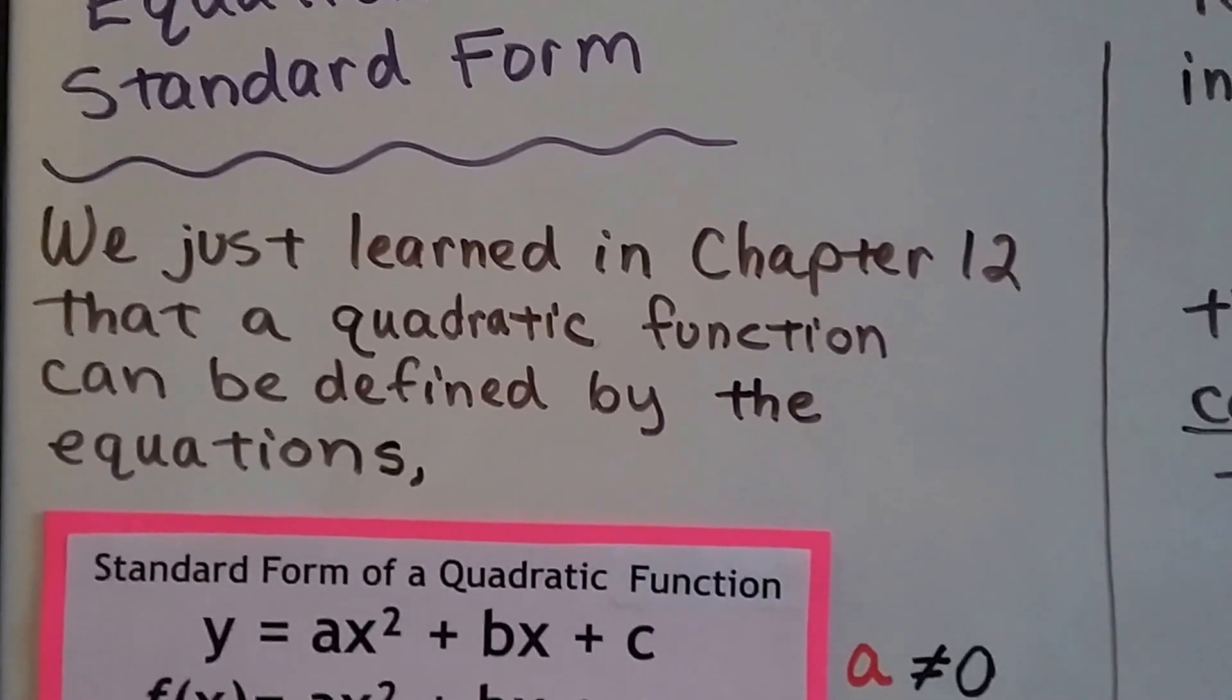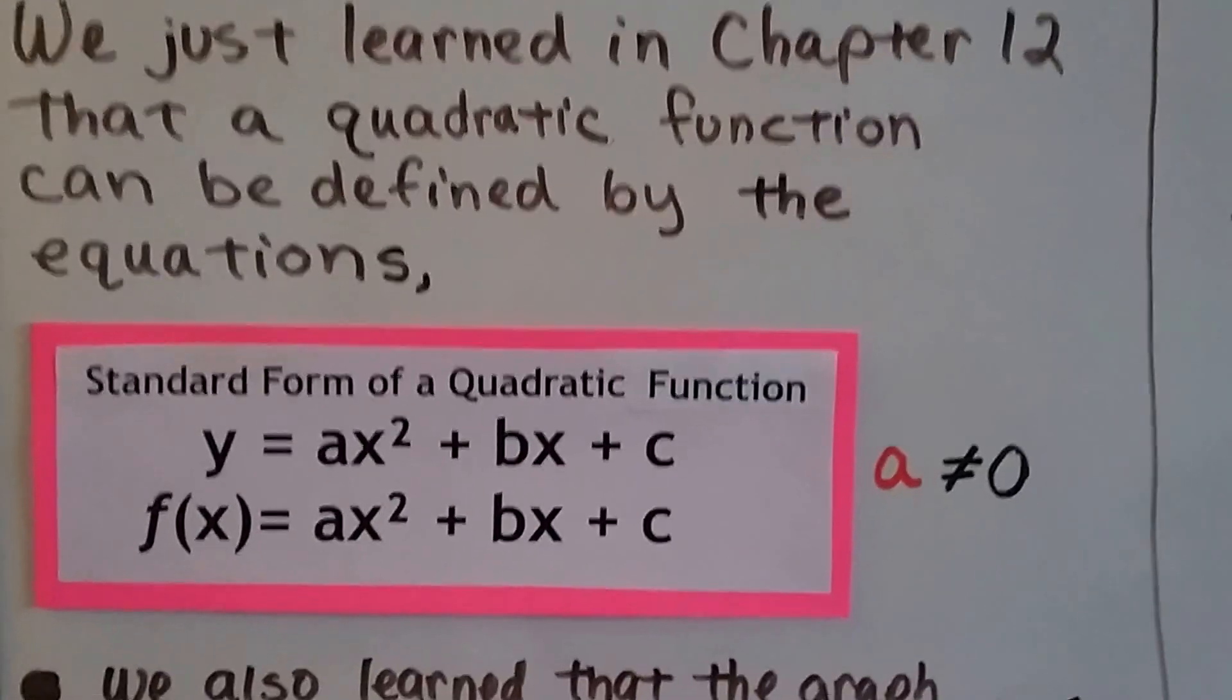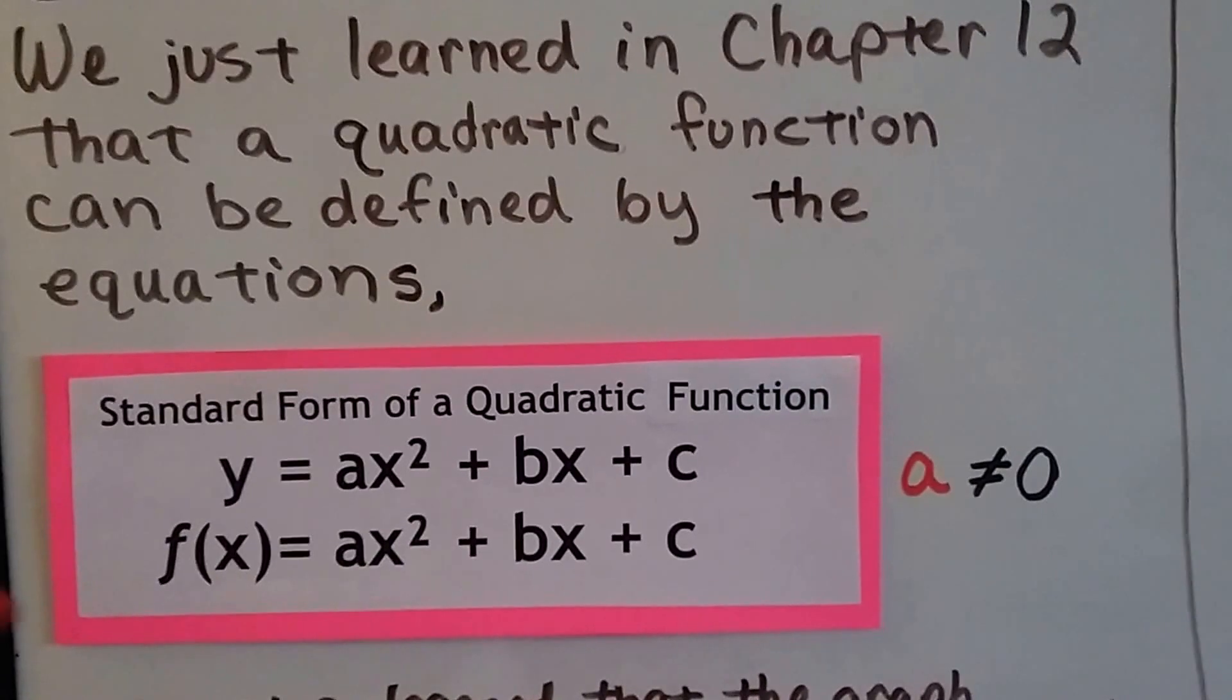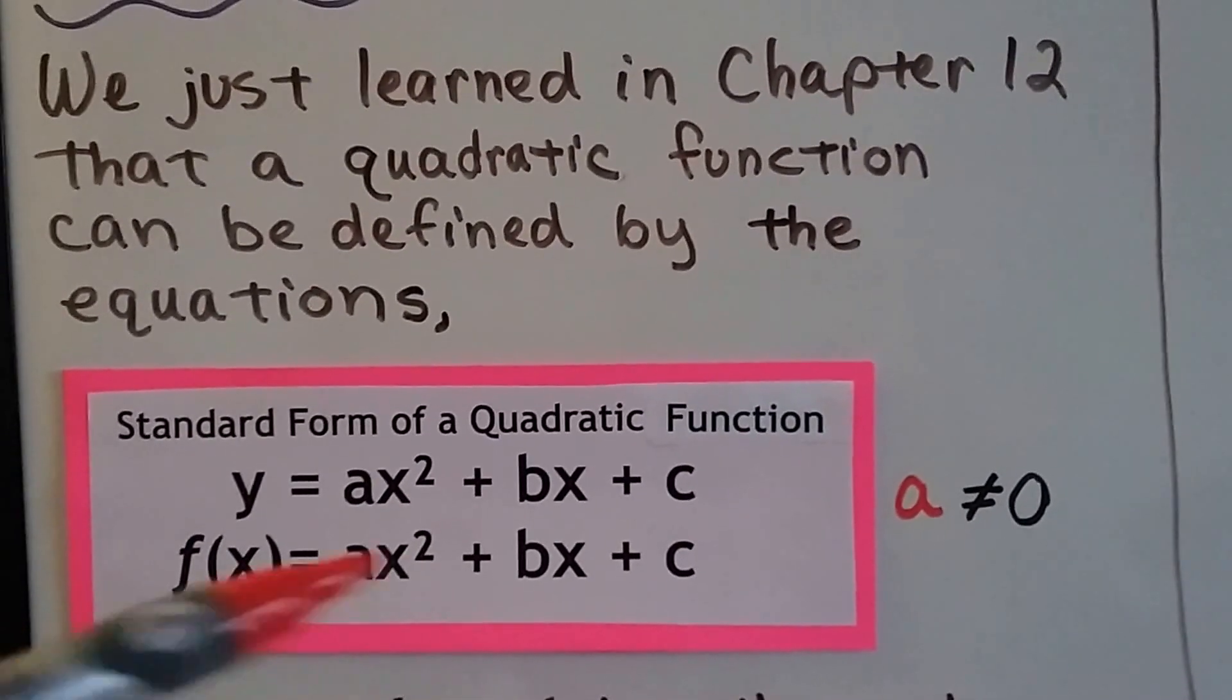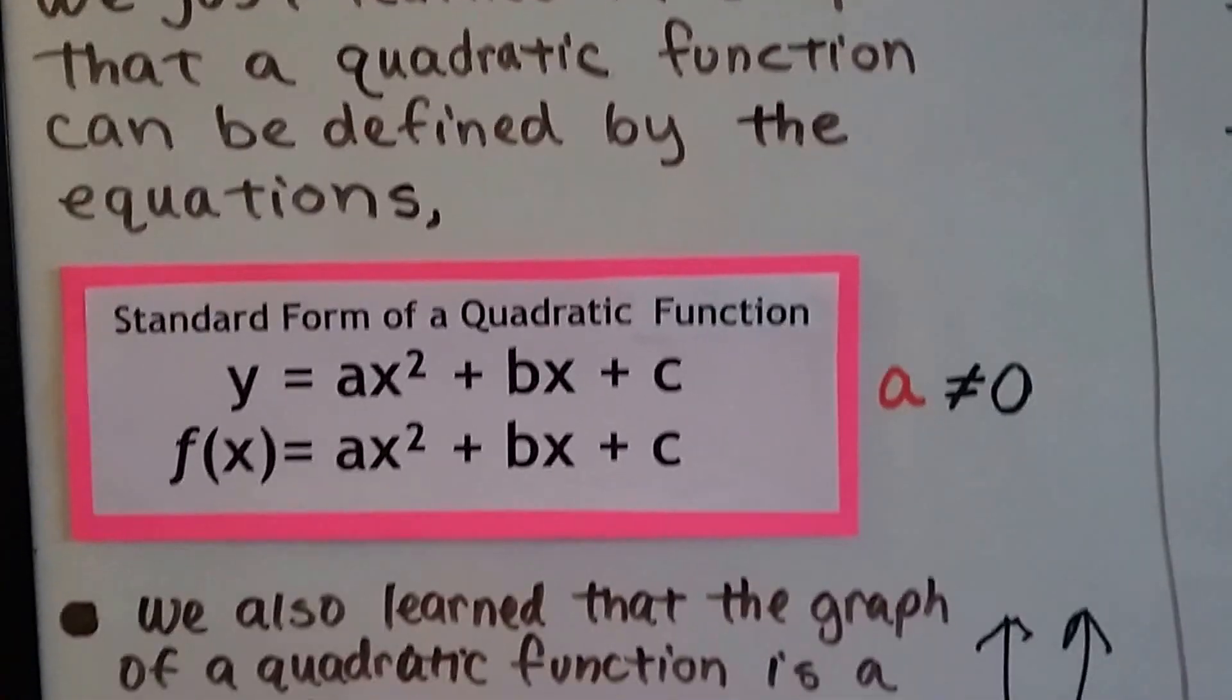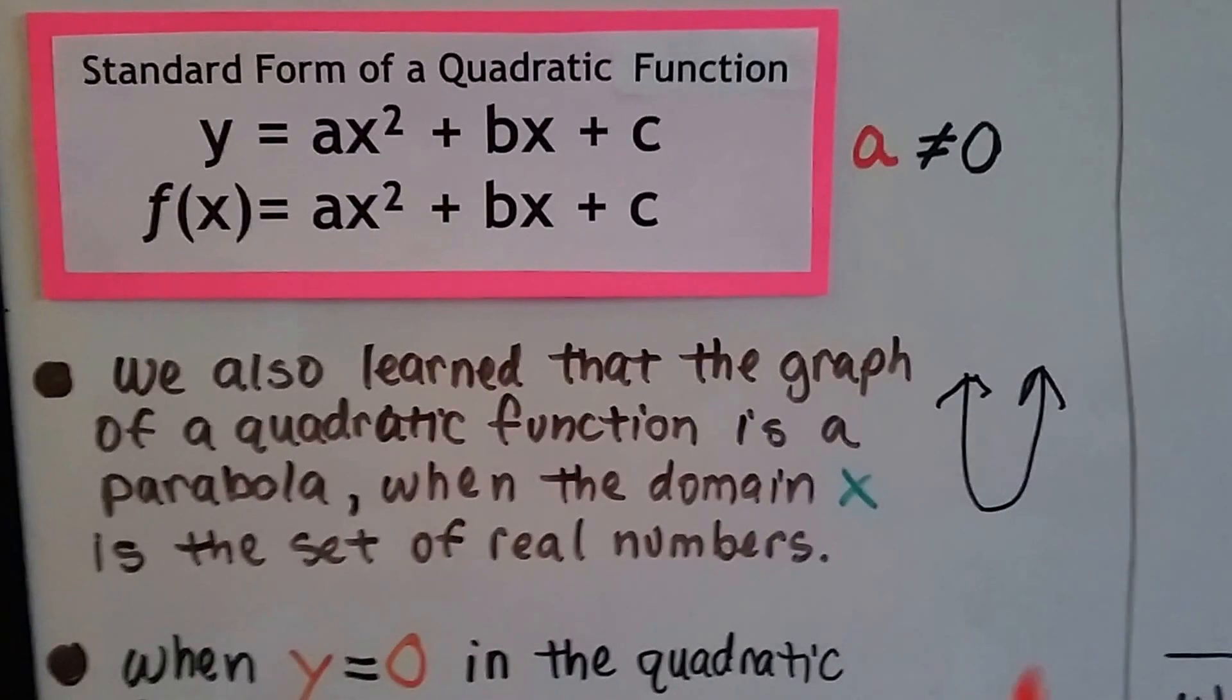We just learned in chapter 12 that a quadratic function can be defined by these equations. It can either be y equals or f, the function of x. So either way, that's a function as long as a doesn't equal zero. And we learned that the graph of a quadratic function is a parabola, like this.